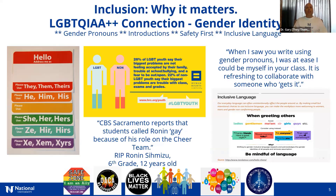26% of LGBTQIA+ students report their biggest problem is feeling accepted at home or by family. They also face bullying at school and fear of being outed. 22% of non-LGBTQ youth say their biggest problems are trouble with class, exams, and grades. Looking around the country, you can see many bills and laws being passed that are sliding LGBTQIA+ advocacy backwards.